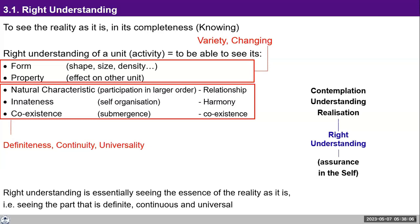Your role in the relationship with any other unit becomes clear to you — that is being referred to as the natural characteristic. Then, if we are able to awaken to the activity of understanding within the self, then you are also able to see the innateness, the self-organization, the harmony that is there in every unit. For instance, for any plant, it is innate that the plant grows. You will never find a plant that doesn't grow — all plants grow. That is innate in a plant, part of its self-organization. You cannot change that.